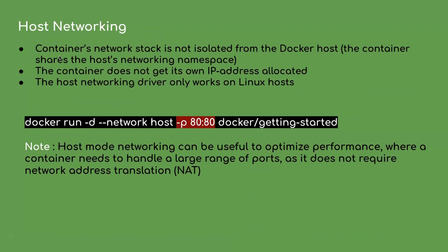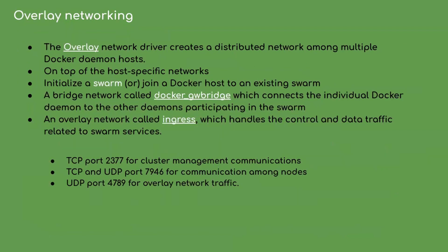The second network option is host network, which means no network isolation, and there will not be any virtual IP address for a container running with host network. Host network option is only available for Linux machines; it doesn't work for Mac and Windows. Host-mode networking can be useful to optimize performance where a container needs to handle a large range of ports, as it does not require network address translation.